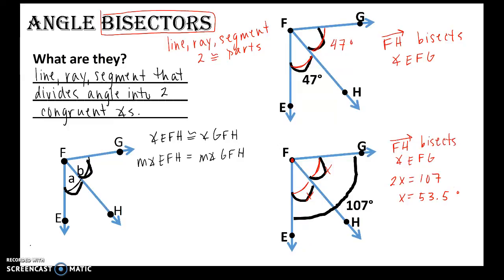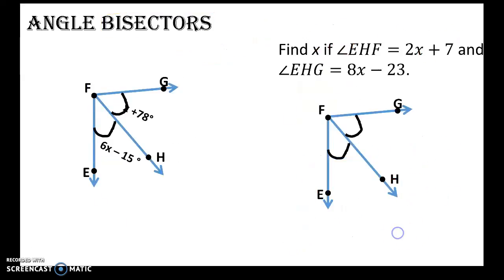All right, we'll look at a couple examples of angle bisectors. Okay, so, and this should read x plus 78. So take a minute, copy those down for me.